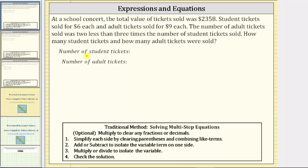Let's first write expressions for the number of student tickets and the number of adult tickets. Because we're told the number of adult tickets sold was two less than three times the number of student tickets sold, let's let the variable n represent the number of student tickets. This means the expression for the number of adult tickets is two less than three times n, which is 3n minus 2. Three n is three times the number of student tickets, and then to get two less, we subtract two.